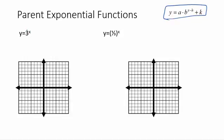Most teachers will start you off with 2 to the x, so you might be more familiar with that. I'll throw 3 to the x in here just to switch things up a little bit. For exponential functions, a good place to start is whatever makes x equal to 0. So I'm going to pick 0, and then pick one point on either side of 0 — negative 1 and 1. Those are usually nice, easy points to plug in.